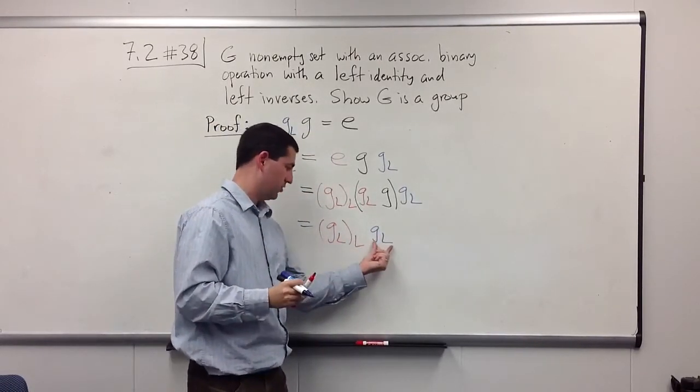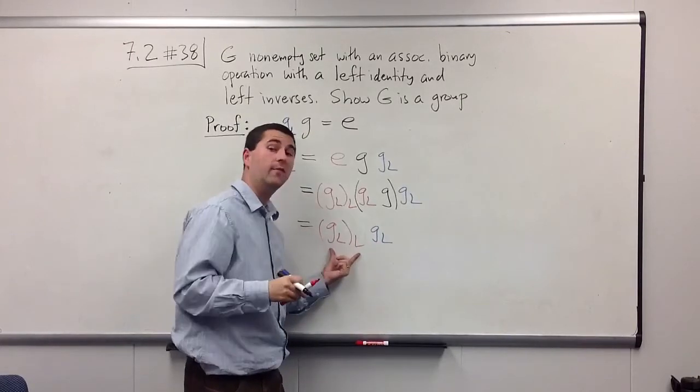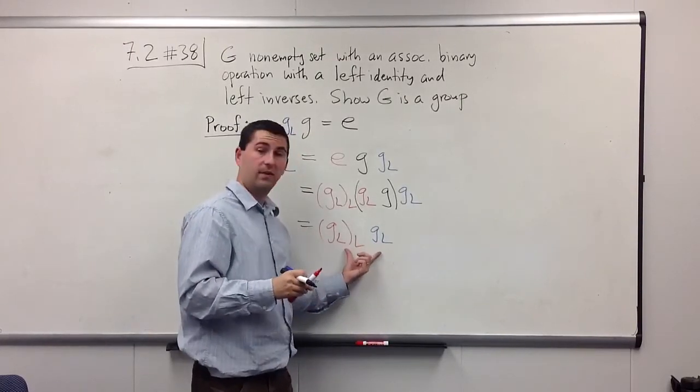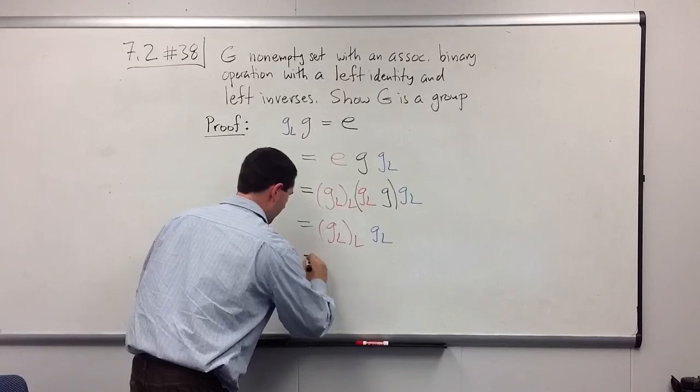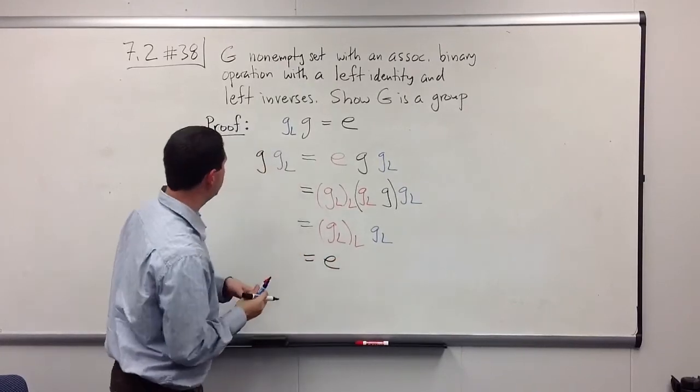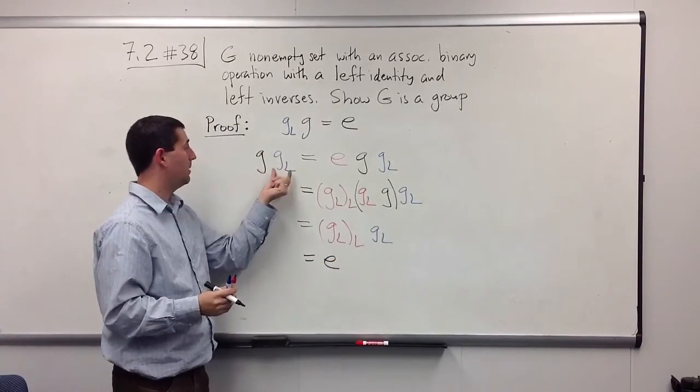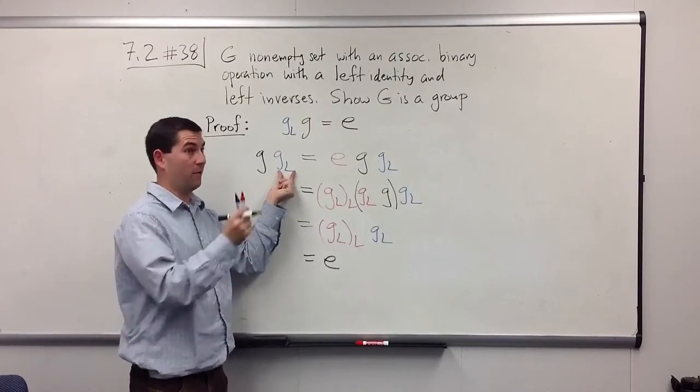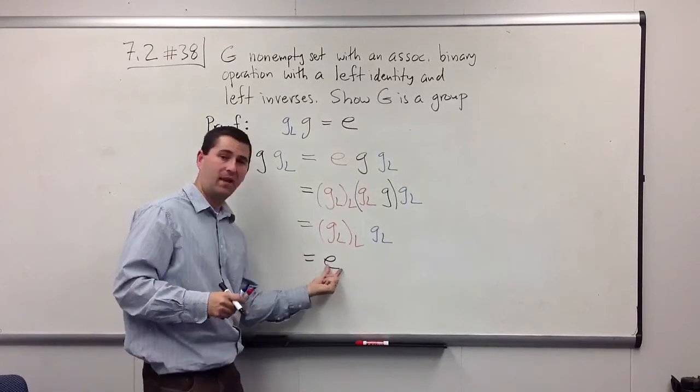But ah, look, I have g_l and its left inverse on the left, where it should be, and so I must get the identity element. And so that tells me, if I multiply g by its left inverse, but on the right side, I still get back the identity element.